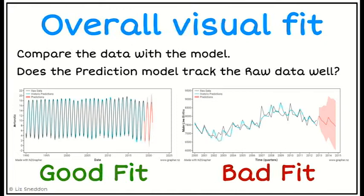Now let's look at this next example. Again, look at the black data and then look at the green model — does that green model track it? We can see that at the beginning the green model tracks the data well, but then we get to a point where it's all out of sync and they don't line up. So the model itself is not very good at all.